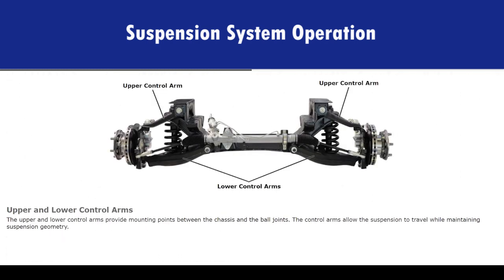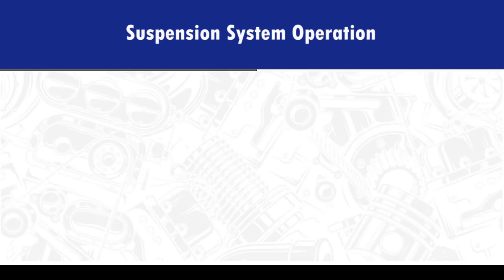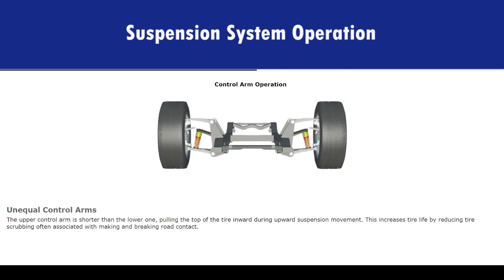The upper and lower control arms provide mounting points between the chassis and the ball joints. The control arms allow the suspension to travel while maintaining suspension geometry. The upper control arm is shorter than the lower one, pulling the top of the tire inward during upward suspension movement. This increases tire life by reducing tire scrubbing often associated with making and breaking road contact.